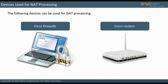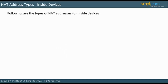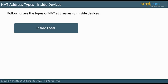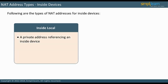Let us understand different types of NAT addresses. There are four different types of addresses in NAT: inside local, inside global, outside local, and outside global. The terms local or global refer to the current location of the packet, while inside or outside refer to the location of the device. An inside local address is a private address referencing an inside device — it is the address of the inside host as seen from inside your LAN. This is most likely an RFC 1918 address.